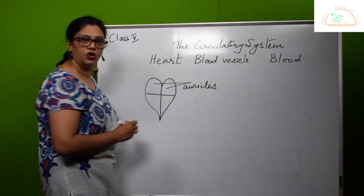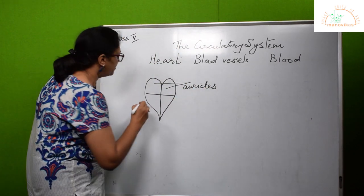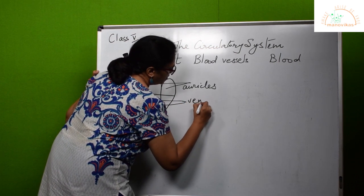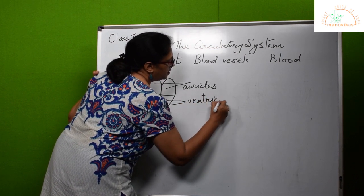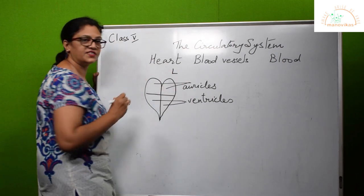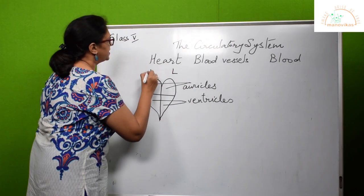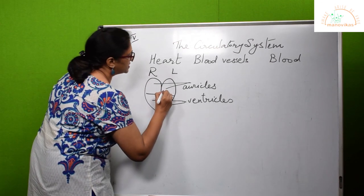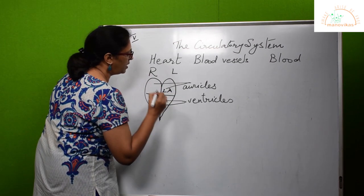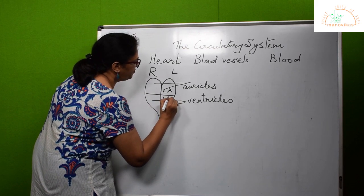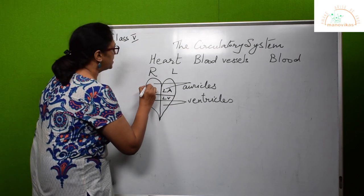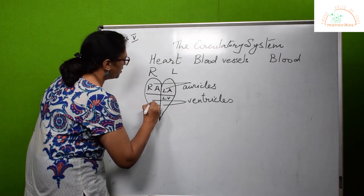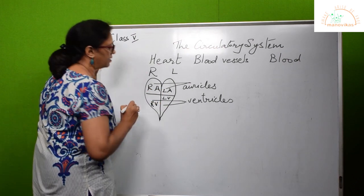The lower two chambers are called ventricles. This is the left side of the heart and this is the right side of the heart. So this is the left auricle, below it is the left ventricle. This is the right auricle, below it is the right ventricle.